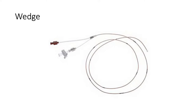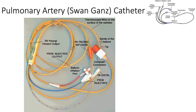A right heart catheterization can be performed with a simple wedge catheter. It effectively has only two ports: one to inflate the balloon and one for drawing blood. The balloon that is inflated is near the very tip of the device, and we typically inflate the balloon and allow the flow of blood to help move the device into the pulmonary artery position.